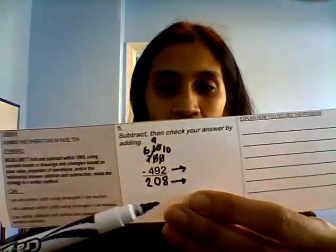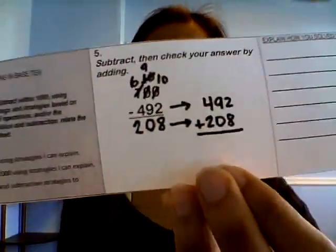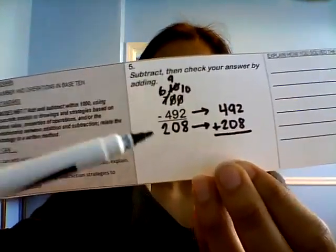So we're going to have to add. I'm going to draw an arrow here so you know what we're adding. So we're going to add 492 plus 208. You see my arrow? I drew that there. So write those numbers down.